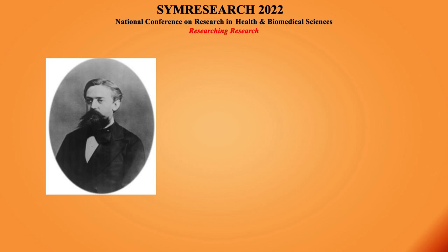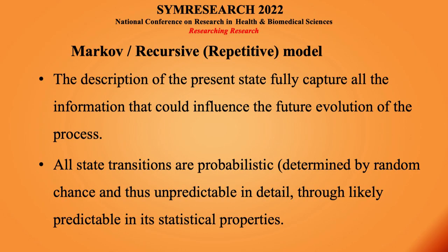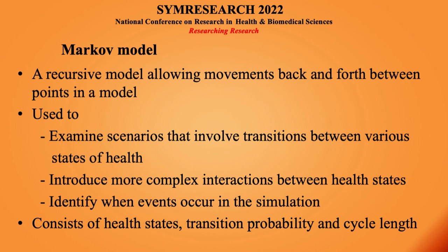You must have seen this person — he is a famous Russian mathematician. His name is Andrey Markov — it's the Markovian assumption. The description of the present state fully captures all the information that could influence the future evolution of the process. Because the model allows movements back and forth between points in a model, it is used to examine scenarios that involve transitions between various health states. It consists of the health states, transition probabilities, and the cycle length — these are the important things whenever we do Markov modeling.